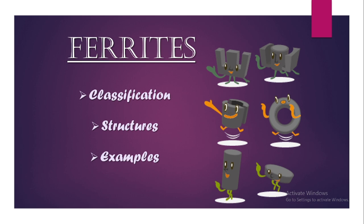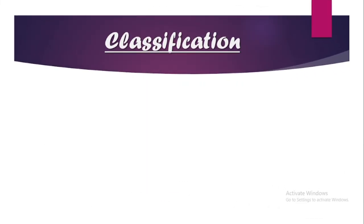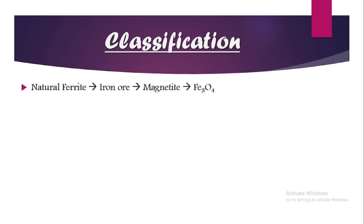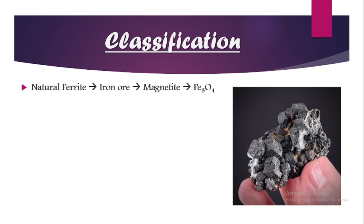In today's class we will be covering the classification of ferrites with their structures and examples. Classification can be based on any kind of parameter, and today we are going to classify ferrites with respect to crystal structure. We already know what a ferrite is, and we know that iron ore — magnetite — is an example of a natural ferrite.